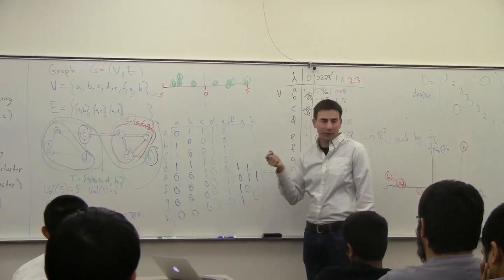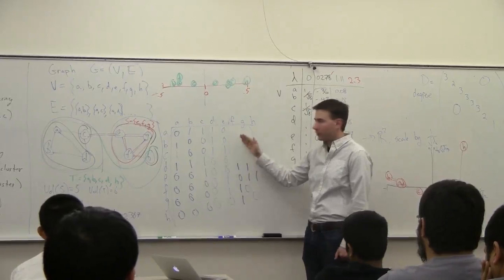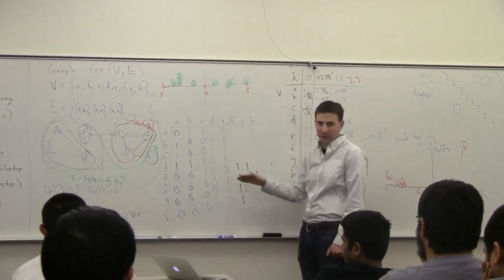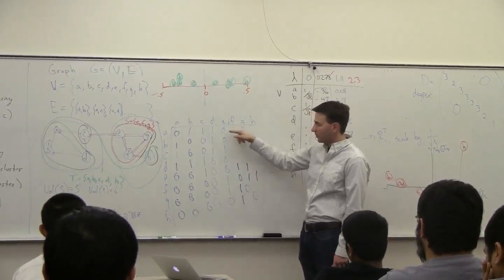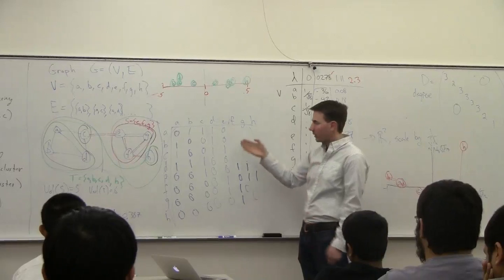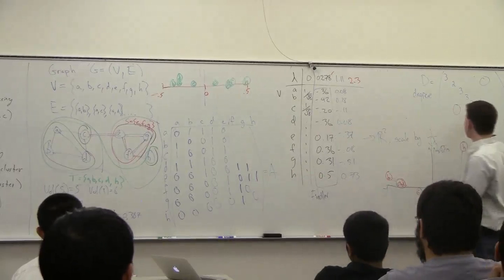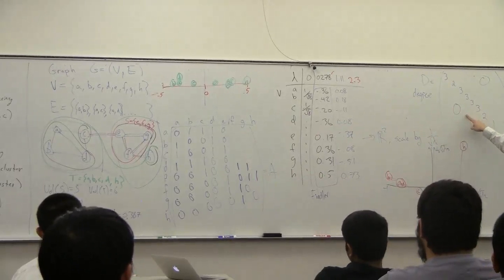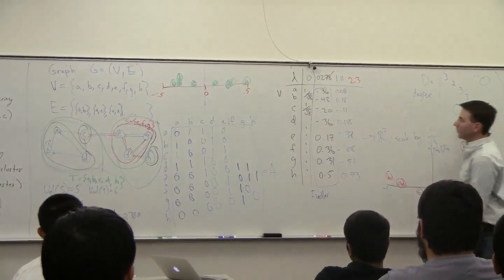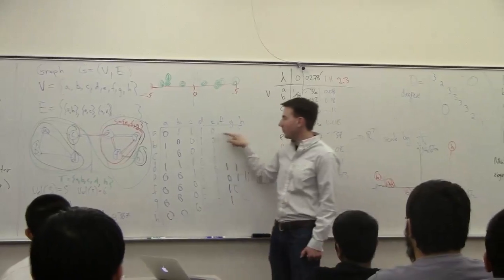But I can have any function, so instead of zero, one here, I can have a value between zero and one for every entry in this graph. And the similarity function, if it's still symmetric, this matrix will still be symmetric. So I can fill in the similarity score between objects in this matrix. Then I can still create this D matrix, this degree matrix, by looking at the property of adding up all these values.